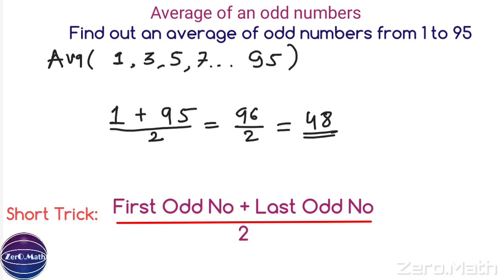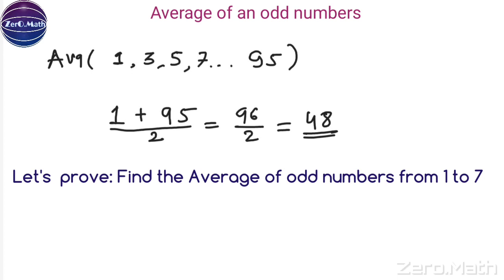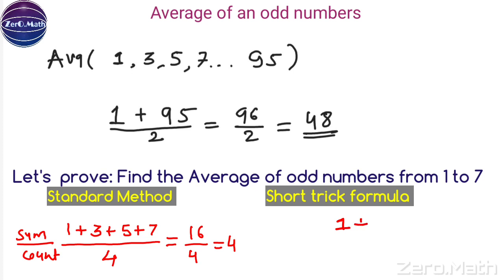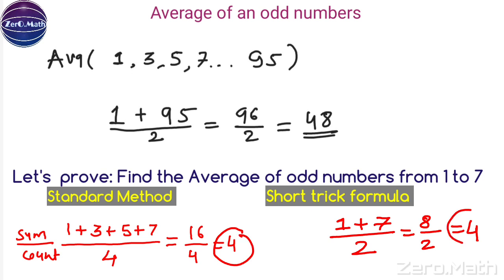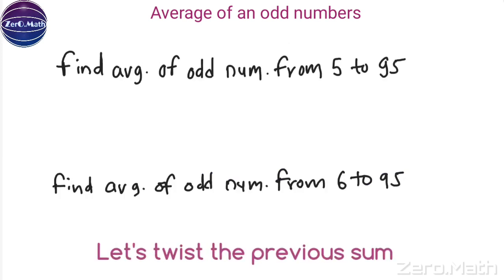The formula is: (first odd number + last odd number) / 2. Let me prove this with a smaller series. Find the average of odd numbers from 1 to 7. Standard method: 1 + 3 + 5 + 7 = 16, divided by 4, equals 4. Now applying the formula: (1 + 7) / 2 = 8 / 2 = 4. We get the same result using the formula.